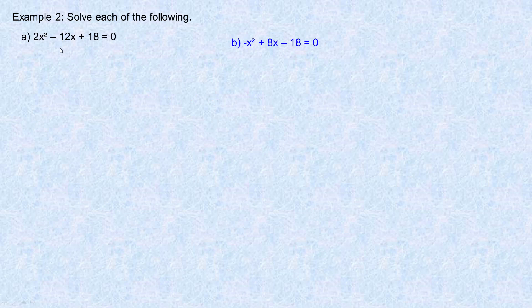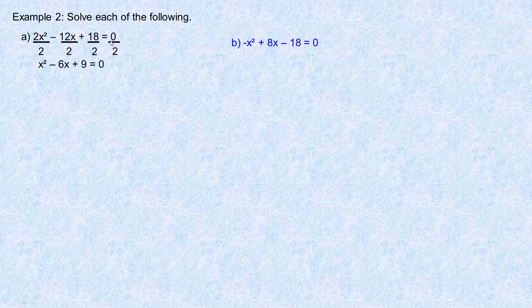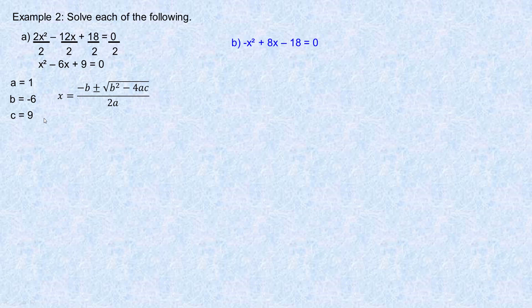On to the second page — we've got a couple of equations to solve. For this first one, notice all the coefficients divide evenly by 2. So if you divide the 2 out, you can make the equation a little simpler. If you don't notice that, it won't change anything — you'll just have bigger numbers in the formula. So 2x squared divided by 2 is x squared, negative 12 divided by 2 is negative 6x, 18 divided by 2 is 9, and 0 divided by 2 is 0. So now a is 1, b is negative 6, and c is 9.